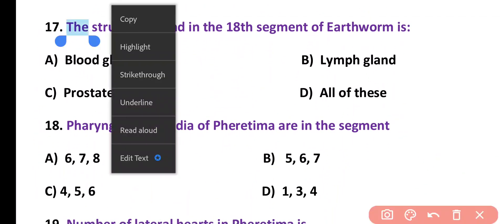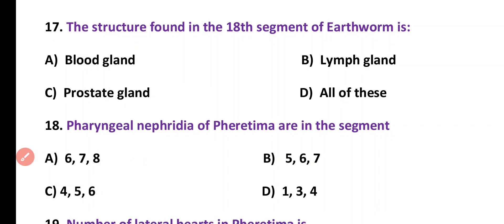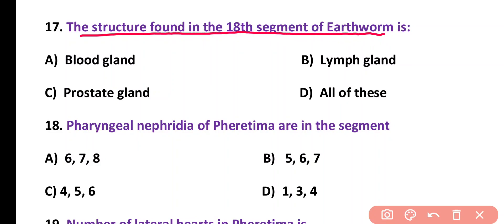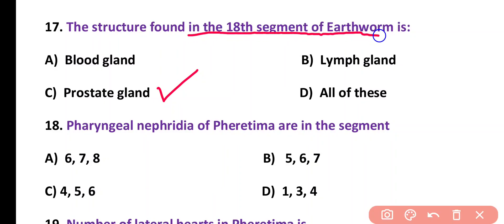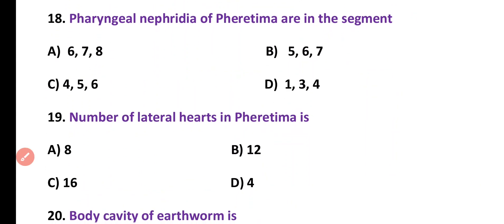Question number 17. The structure found in the 18th segment of the earthworm is: blood gland, lymph gland, prostate gland, or all of these. Correct answer is option C. Prostate gland is found in the 18th segment of the earthworm body.